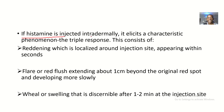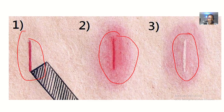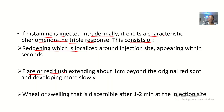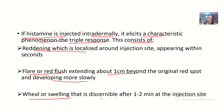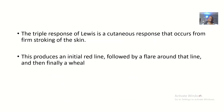So if histamine is injected intradermally, it elicits a phenomenon which is the triple response. This consists of: first, reddening, which is localized around the injection site appearing within seconds. Secondly, there's a flare or red flush extending about one centimeter beyond the original red spot and developing more slowly — this red spot extends from the site of injection at least beyond one centimeter. And thirdly, there's a wheal or swelling that is discernible after one to two minutes at the injection site.